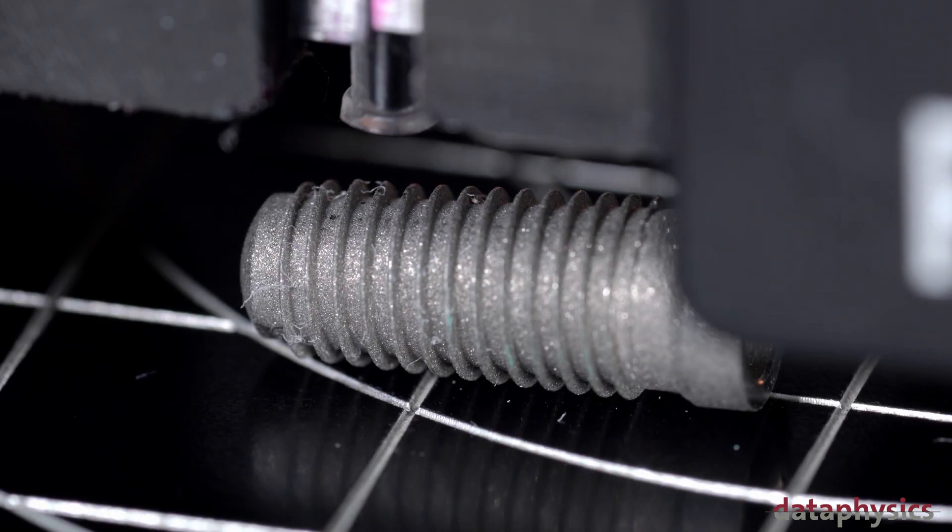The picoliter dosing system is capable of dosing individual droplets down to 30 picoliters in size. These tiny droplets enable measurement of contact angles on the individual wires of a stent or inside the screw threads of a dental implant.